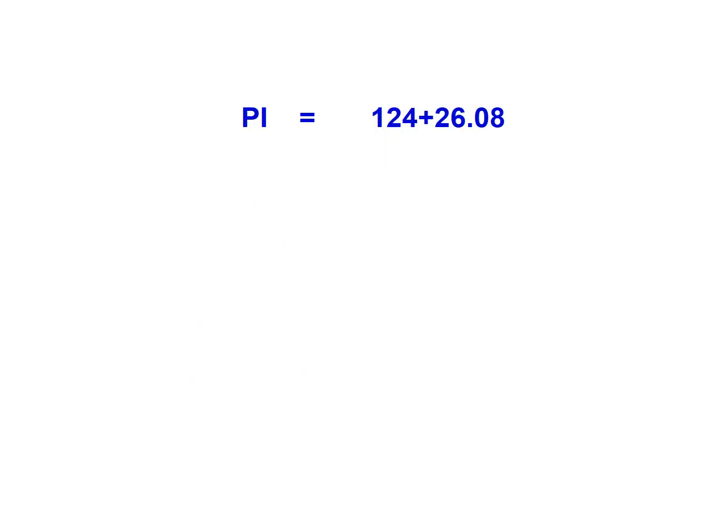Finally, doing the math: we started with the PI given as station 124 plus 26.08. We're going to subtract off T2 that we calculated of 3 plus 99.05, giving us the PC station of 120 plus 27.03.